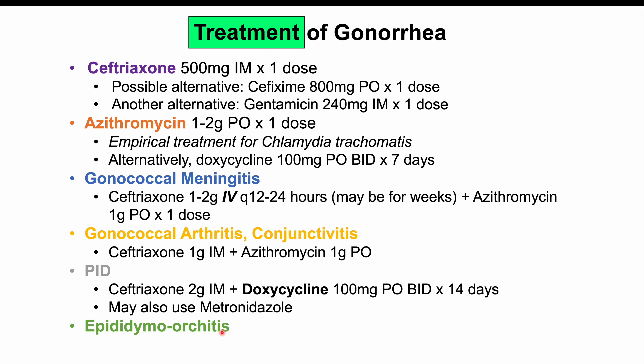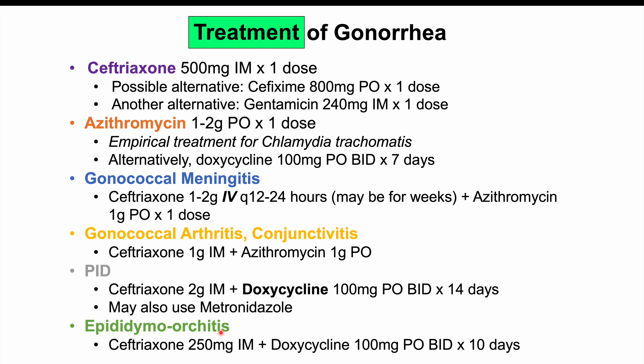For epididymal orchitis, treatment is ceftriaxone 250 mg IM plus doxycycline 100 mg PO BID for 10 days. These are the various approaches to treating gonorrhea depending on the complication and subtype of infection.